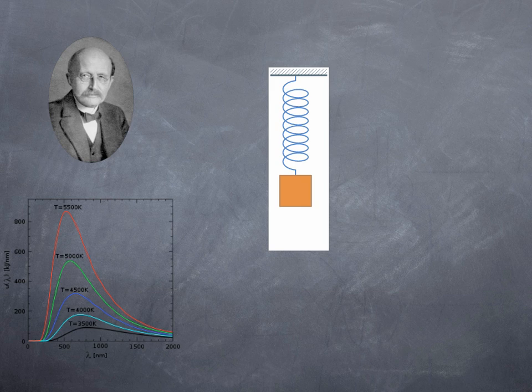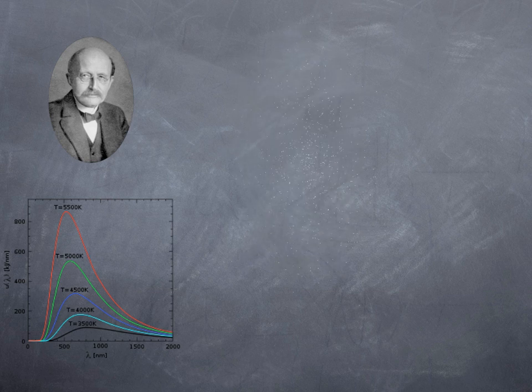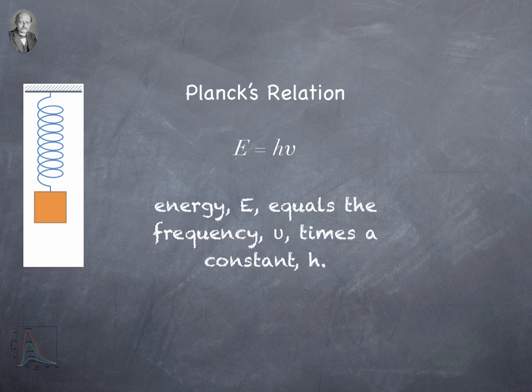He's trying to generate these curves and look at them experimentally in detail. He's doing it by saying there's a system of harmonic oscillators — a little mathematical trick. He comes up with Planck's relation, which is energy equals a constant H times the frequency ν — which isn't V, but a little Greek nu thing.